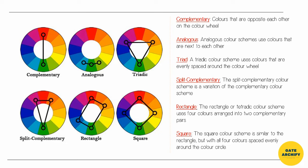Split-complementary is a variation of the complementary color scheme. Rectangle color scheme uses four colors arranged into two complementary pairs. Square color scheme is similar to rectangle, but all four colors are spaced evenly around the color circle.